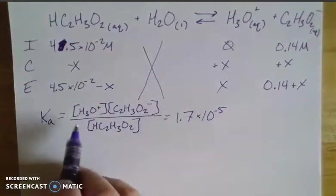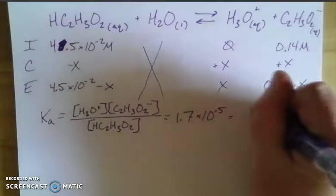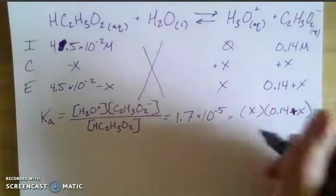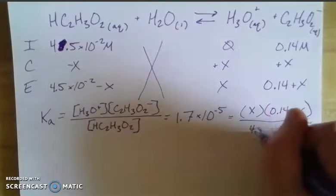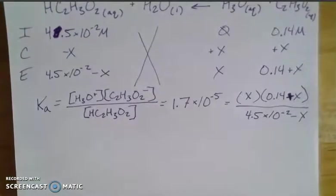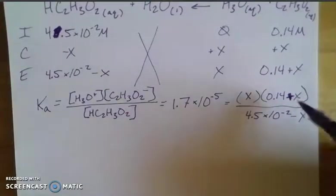So now I can plug in kind of my values here. So if I plug in my x and my 0.14 plus x, and then that's all divided by my 4.5 times 10 to the minus 2 minus x. Then this is the equation I'm looking to solve. Now if we want to see if we can make the math friendlier, which is what we always want to do, right? It's always nice to make the math a little friendlier. Then we need to decide if we can disregard these x's.